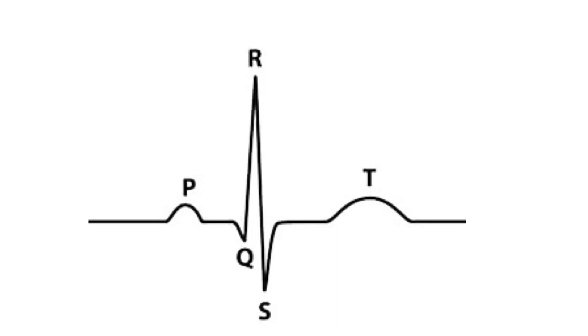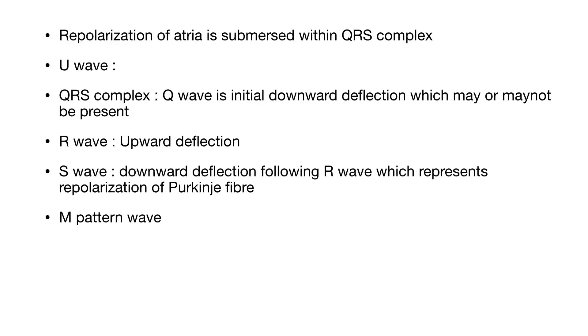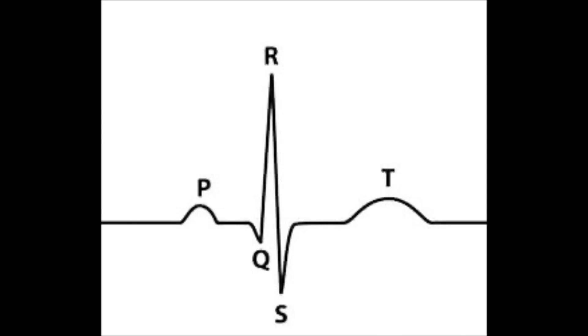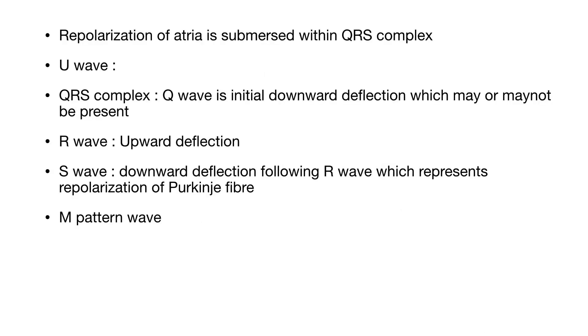Q-wave is the initial downward deflection which may or may not be present. Q-wave represents myocardial fibrosis or myocardial scar so it is basically present in old myocardial infarction. R-wave is the first upward deflection of QRS complex.